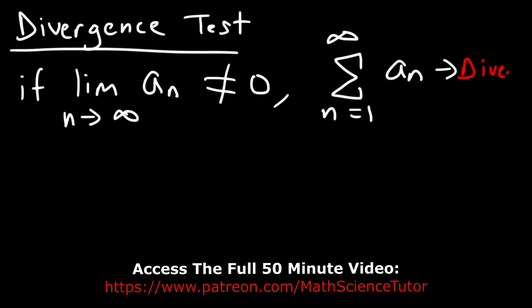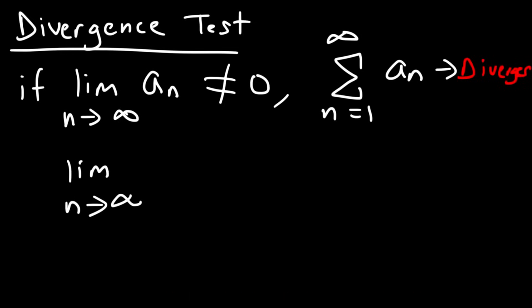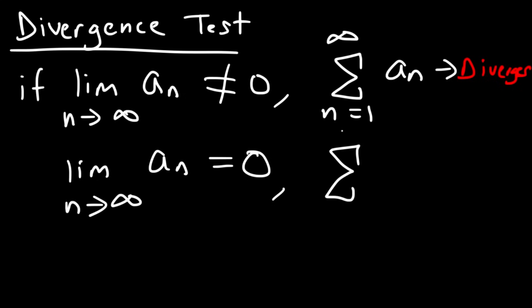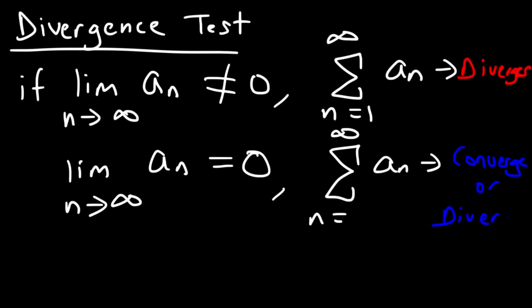What if the limit equals zero? If the limit as n approaches infinity for a sub n equals zero, then the series may diverge or may converge — we don't know, and we have to use other tests. The divergence test is a quick way to confirm divergence, but if the limit equals zero you need another test to determine convergence or divergence.